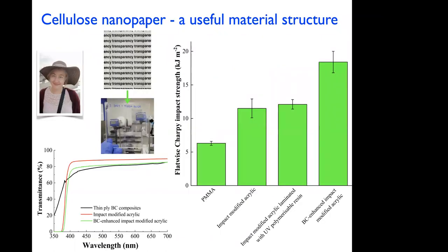Moving slightly away from renewable materials, nanopapers were also turned into a transparent film and laminated with an impact-modified acrylic resin to create a transparent 3 mm thick structure useful for impact protection. Conventional PMMA has an impact strength of about 6 kJ/m². Impact-modified PMMA reaches 12 kJ/m². Adding cellulose nanopaper pushes the impact strength up by 60% relative to impact-modified acrylic — showing that nanopapers are useful not just for renewable materials, but also for high-performance engineering applications.